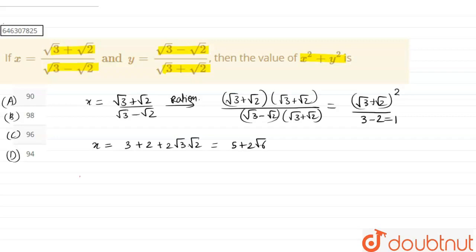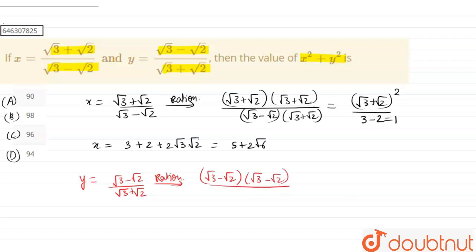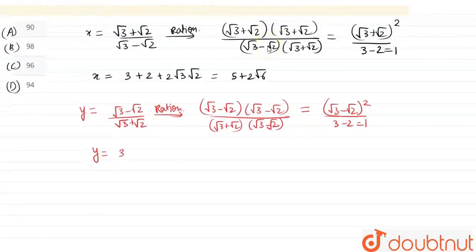Similarly, for y, we have (√3 − √2) divided by (√3 + √2). On rationalizing, we multiply and divide by (√3 − √2), giving us (√3 − √2)² divided by (3 − 2), which equals 1. That turns out to be y equals 5 − 2√6.